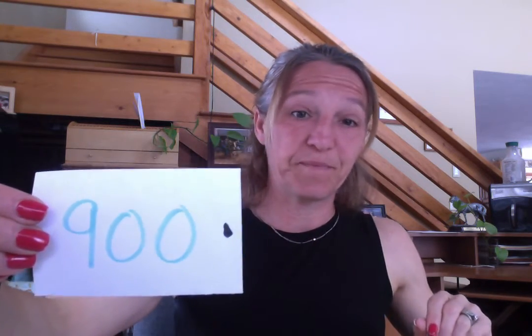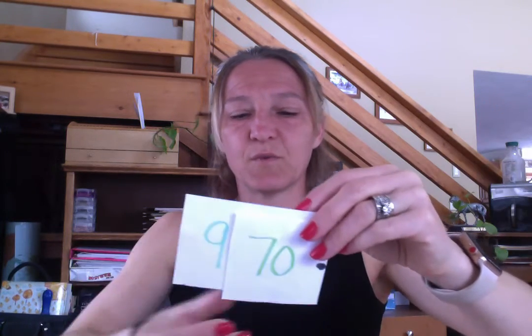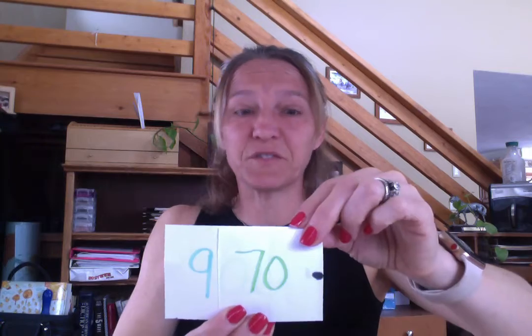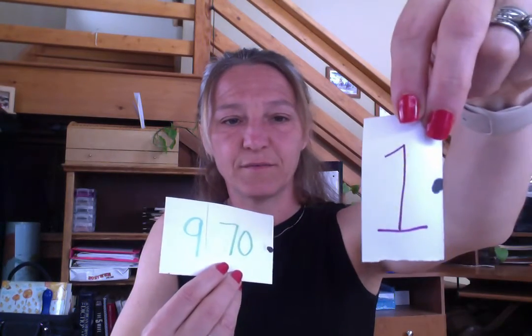I said that was the last one, but let's do one more. We have 970 — what number is that? 970. And then I just have one. So what number did I make? 971. Nice job.